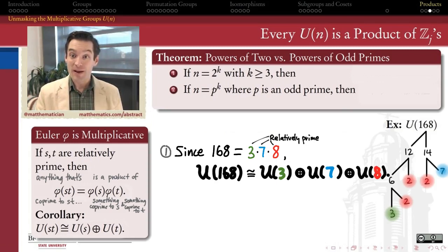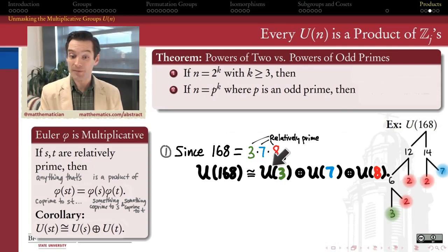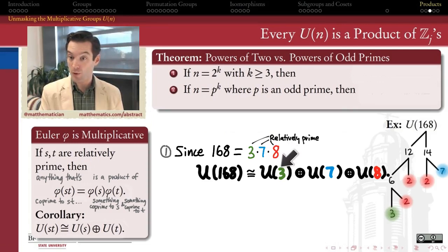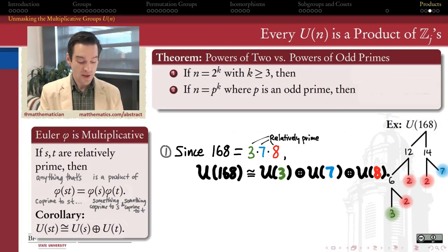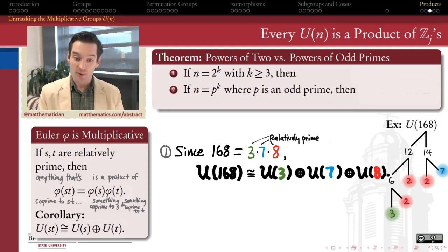Already we've made a ton of progress toward understanding the structure. We can think of U(168) as being isomorphic to an ordered triplet where the first entry is a number relatively prime to 3 (so 1 or 2), the second entry is a natural number relatively prime to 7 (so 1, 2, 3, 4, 5, or 6), and the last entry is something relatively prime to 8 (choices are 1, 3, 5, and 7). So the first entry comes from a group of order 2, the second from a group of order 6, and the third from a group of order 4.